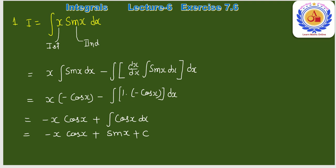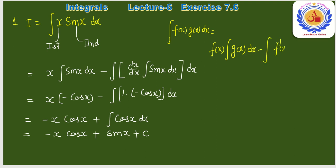Integration by parts formula apply करते हैं: ∫f(x)·g(x)dx = f(x)·∫g(x)dx − ∫[f'(x)·∫g(x)dx]dx। यहाँ x as it is रहेगा, integral of sin(x) = −cos(x), और derivative of x = 1।